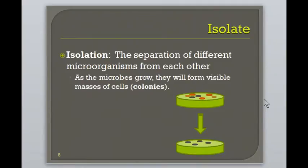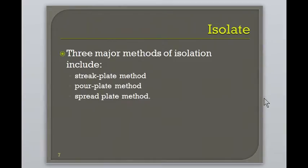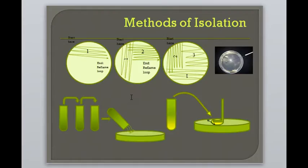There are several methods of isolation. The three methods for isolation are the streak plate, pour plate, and the spread plate. In all three methods, the purpose is to dilute the sample. You will perform a streak plate technique in lab. In this procedure, an inoculum is spread across the plate in three to four sectors. Bacteria are obtained from the previous sector and streaked across the agar, thus diluting the sample.